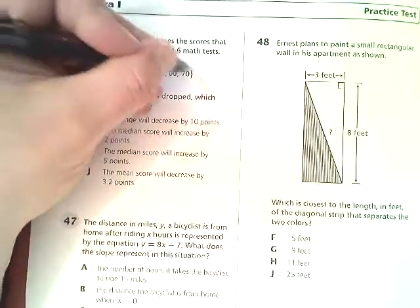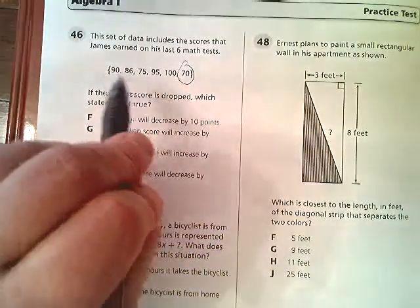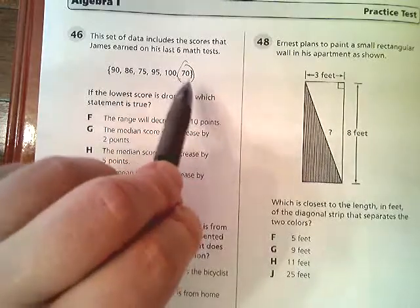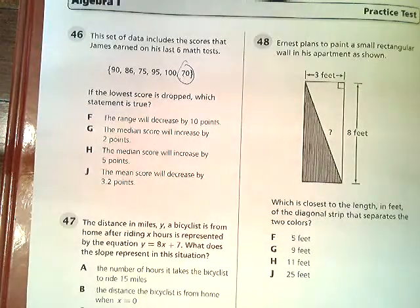Well, first off, we have to look at which would be the lowest score. Here, the 70 would be it. So I'm going to look at the data with all six terms, and then I'm going to drop that 70 and look at it again.